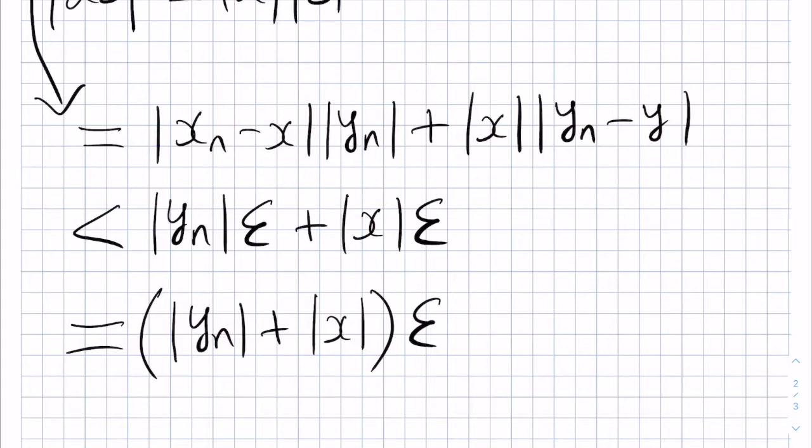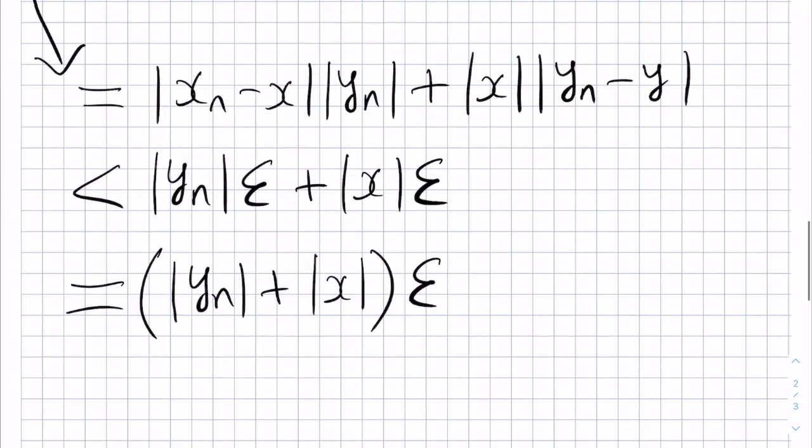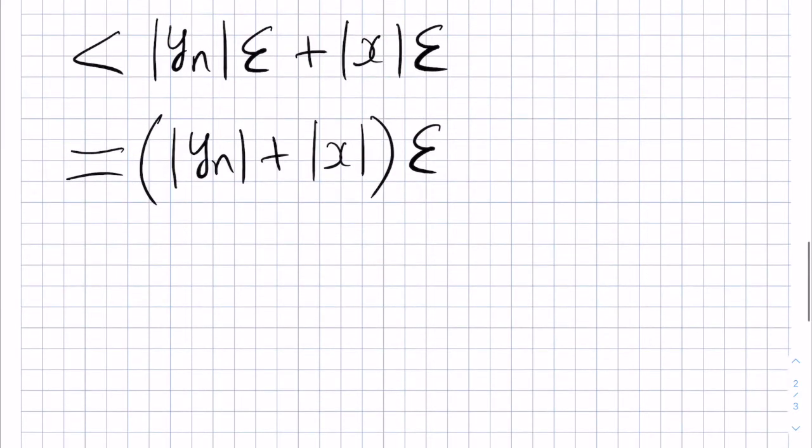Now, in order to proceed, we need to use an extra idea. If this modulus of Yn were actually a constant like the modulus of X is, then we would be done, because we would have reached a constant multiple of epsilon, which is acceptable since it does not depend on little n. We didn't discuss this in the video on this topic, but if you have a convergent sequence, then it is also bounded.